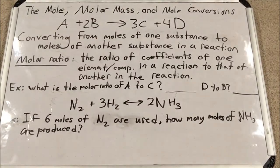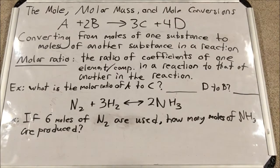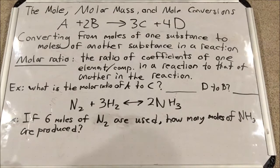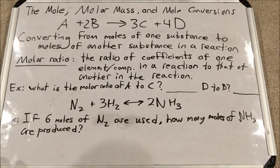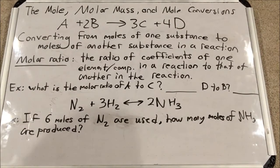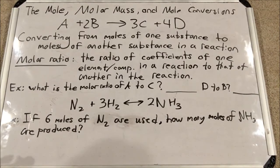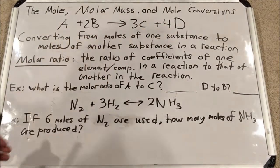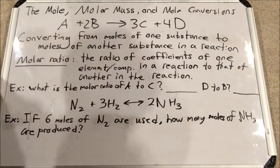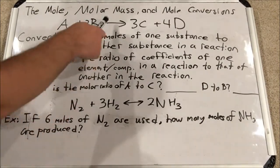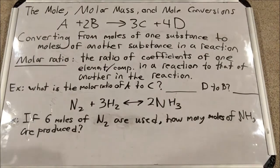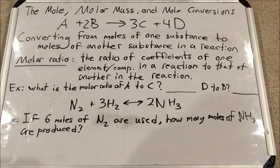Now let's look at reactions. We're going to learn how to convert between moles of one element in a reaction to moles of another using what's called the molar ratio. The molar ratio is a ratio of the coefficients of one element or compound in a reaction to that of another. In a generic reaction, one mole of A plus two moles of B yields three moles of C and four moles of D — that's what those coefficients mean.